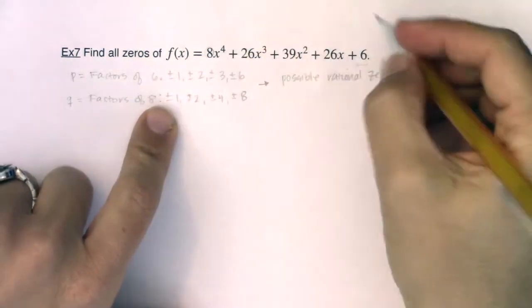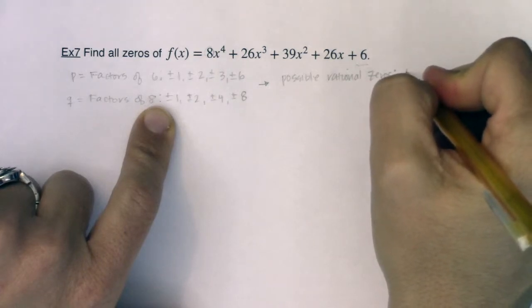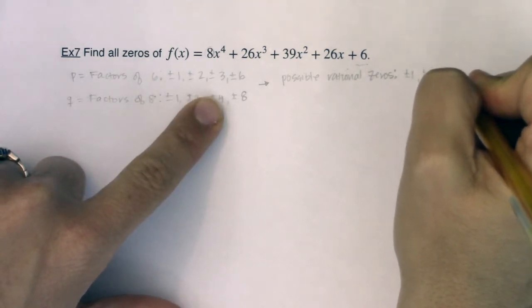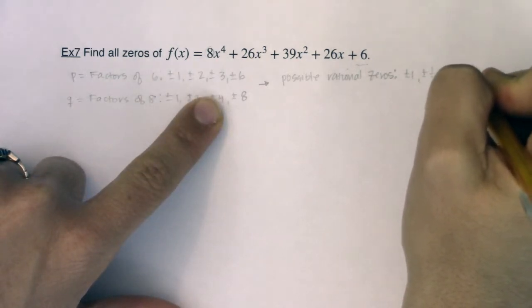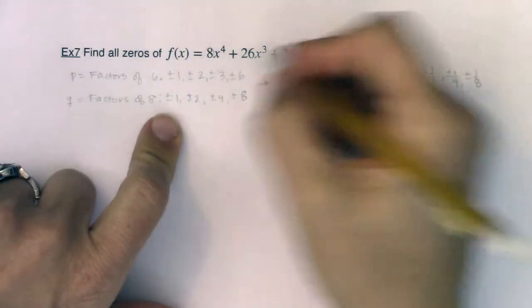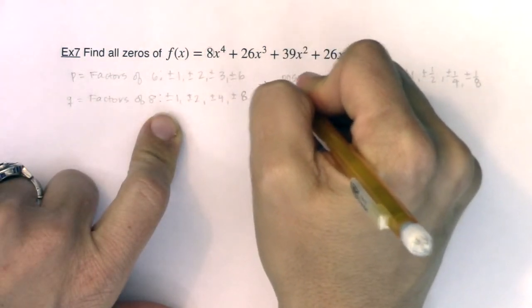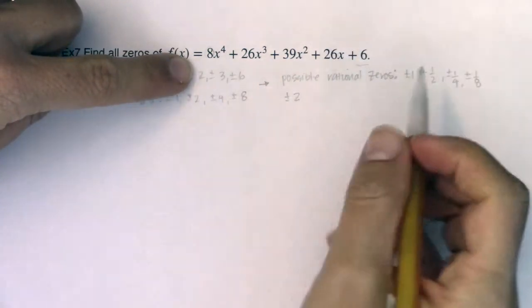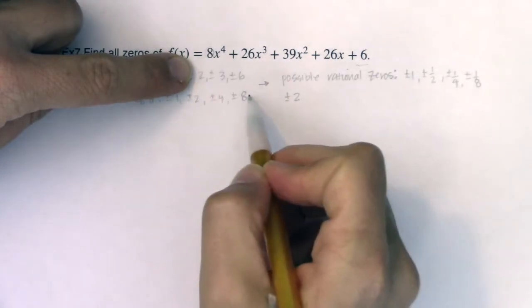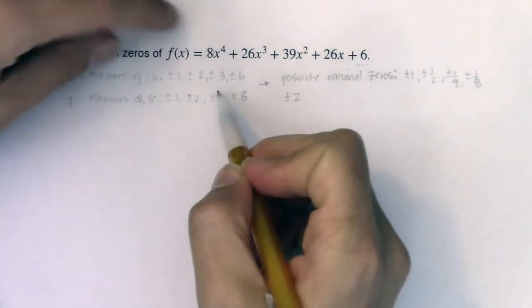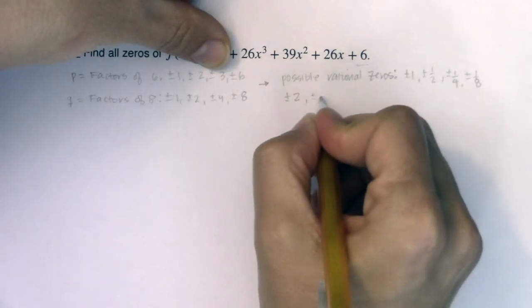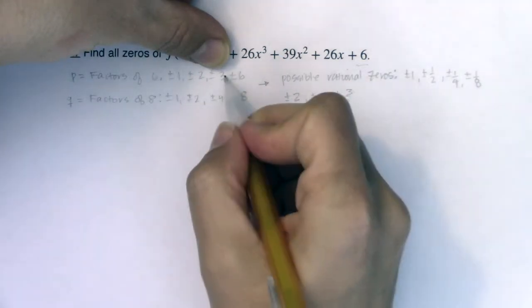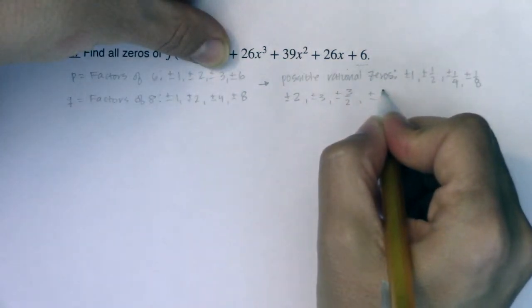So let's see. I would go one over one, so plus or minus one. And then we would have one half, one fourth, one eighth. If I do the twos, it'd be plus or minus two. Two over two is one — already have it. Two over four is a half — have it. Two over eight is a fourth — have it. Three over one needs to be on my list. Three over two needs to be on my list. Three over four, and three over eight — all of those need to be on my list.